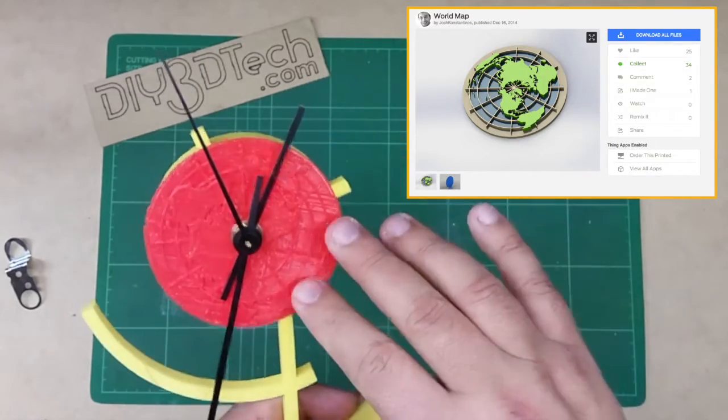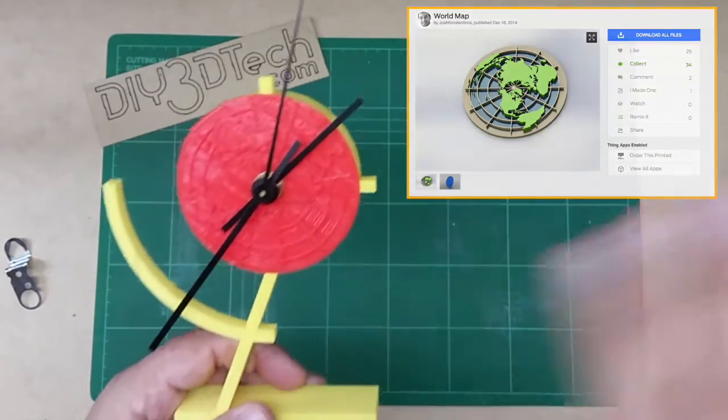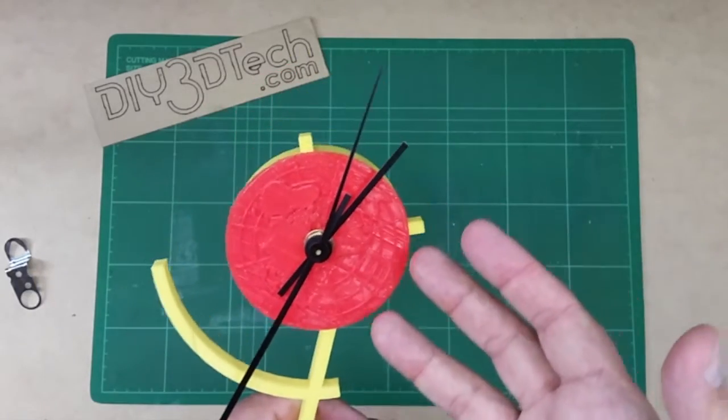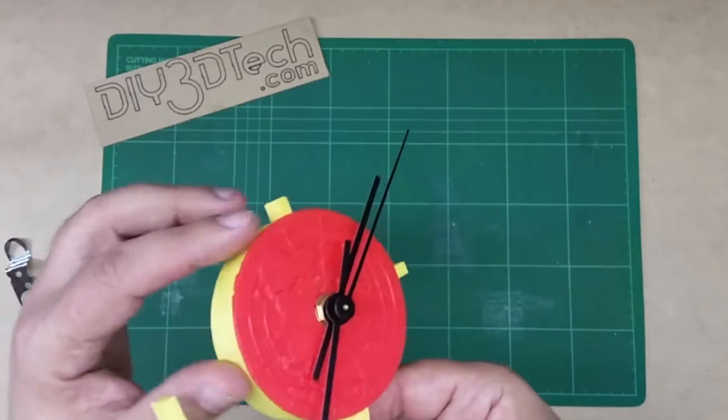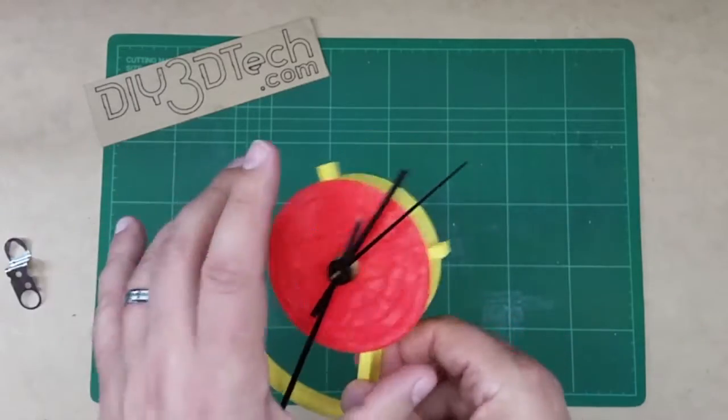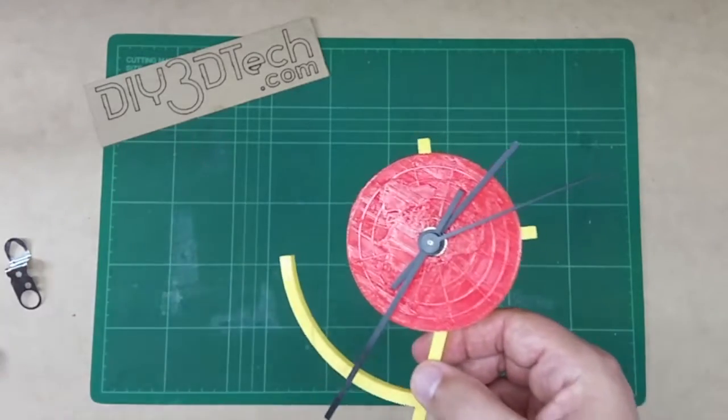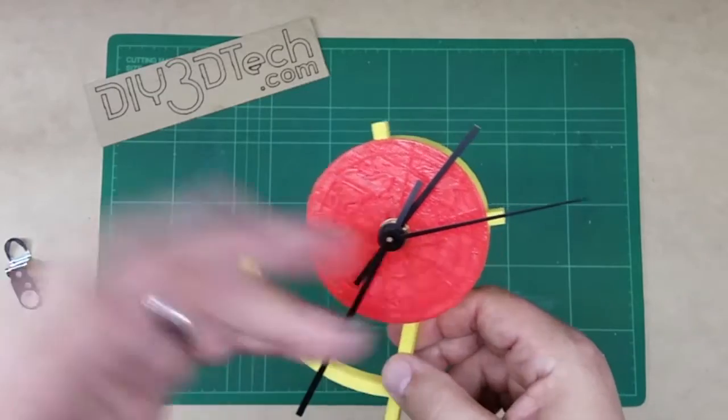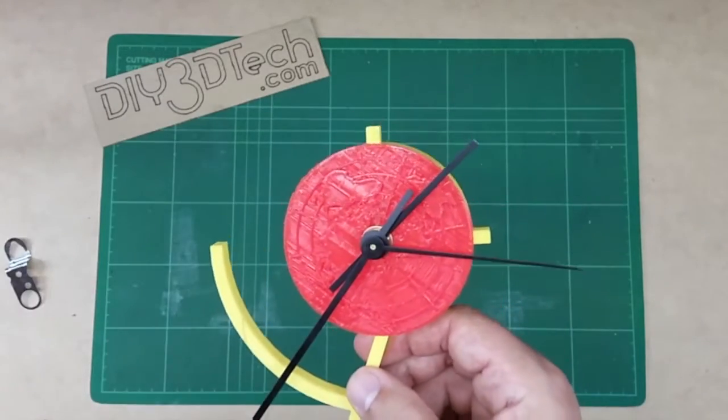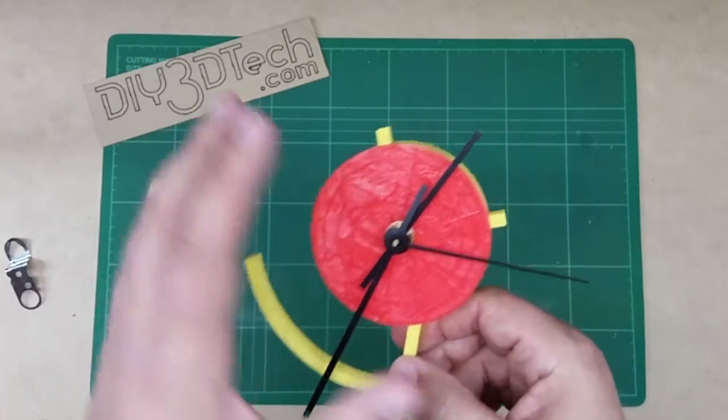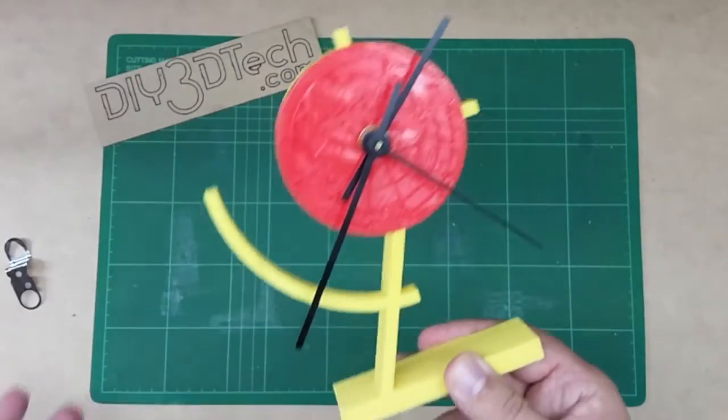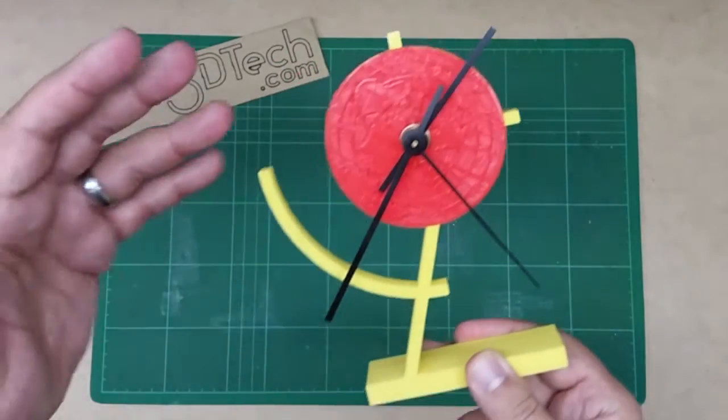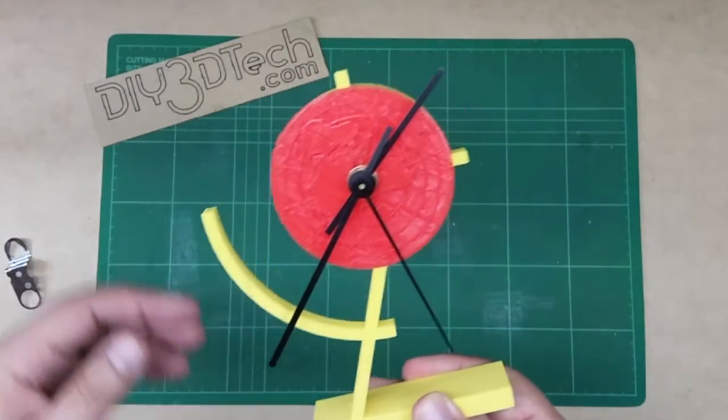And the cool idea about this that I want to share is you can create all kinds of different faces for this clock. So in this case I've created a global map. You could do a Christmas tree. You could do your kid's name. You could do a picture of somebody. It doesn't really matter. And you can change it with the seasons and put it on the front here and you get a whole new look each time you do it. So I thought this was kind of neat. So I'll put this up on Thingiverse with this.